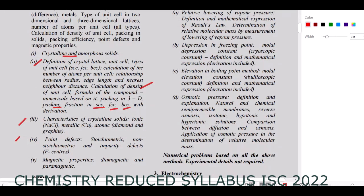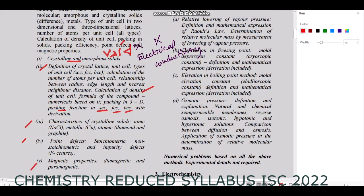For Solid State, the magnetic property is present, but the electrical property part is removed — that includes conductor, insulator, P-type, N-type, and electrical conductivity types. Additionally, the void portion and the radius ratio are removed. So the void part and electrical conductivity part are both cut from Solid State.